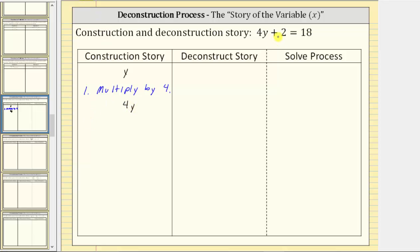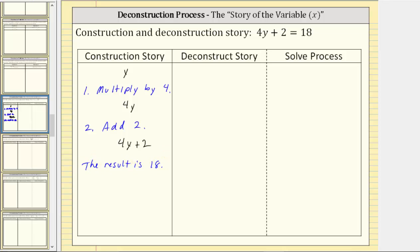Because we have the plus two here, we add two to this product. So step two is to add two. If we add two to this product, we have the expression four y plus two. And because we have equals 18, the result is 18, which gives us the equation four y plus two equals 18.